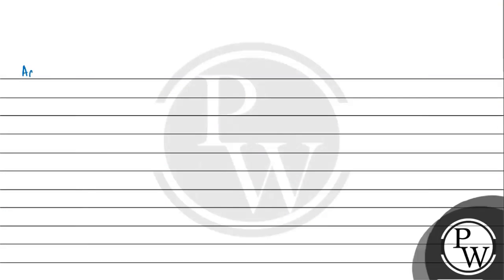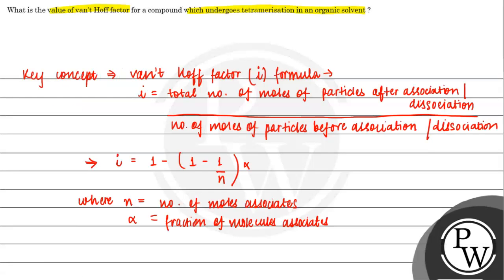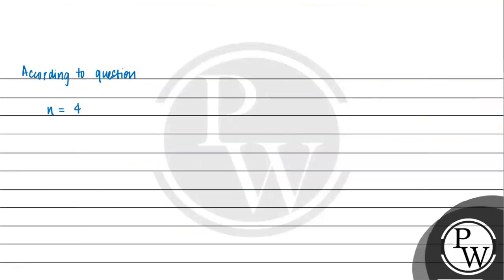According to the question, n is equal to 4. We know the number of molecules that associate — it is a tetramerization, and tetra means 4. So our n will be 4. If complete association is taking place, then alpha will be 1.